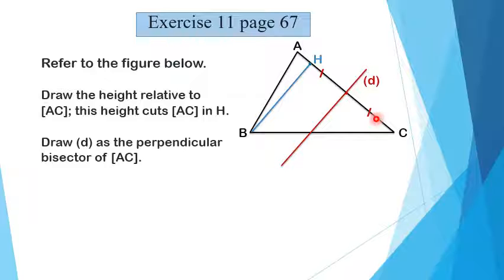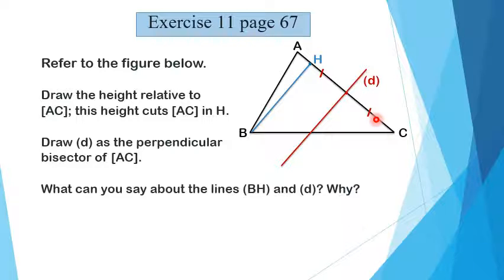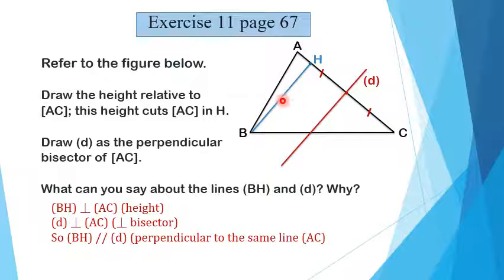Again, the perpendicular bisector is a line perpendicular to a segment at its midpoint. What can you say about lines pH and D? This is pH and this is D. How are they?